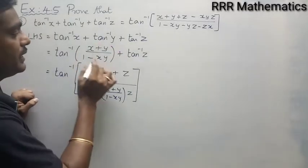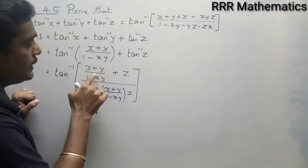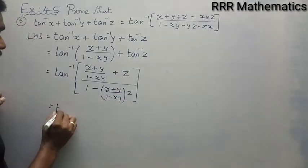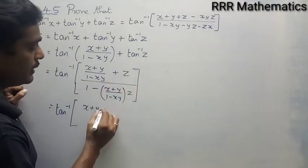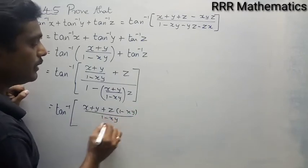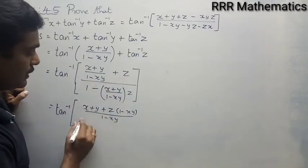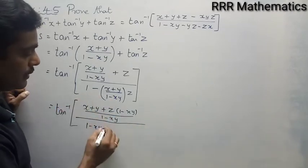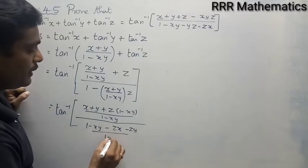Taking LCM, the numerator becomes x plus y plus z times (1 minus xy), and the denominator becomes 1 minus xy minus z times x minus z times y, all divided by (1 minus xy). The (1 minus xy) factors cancel.